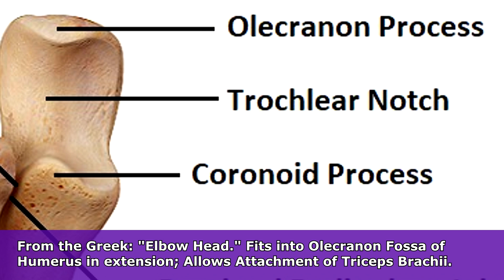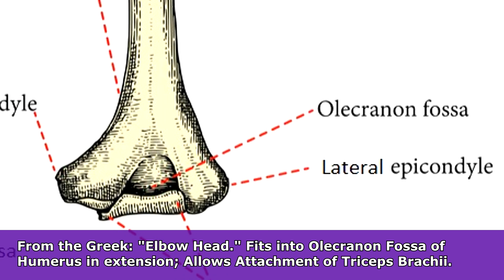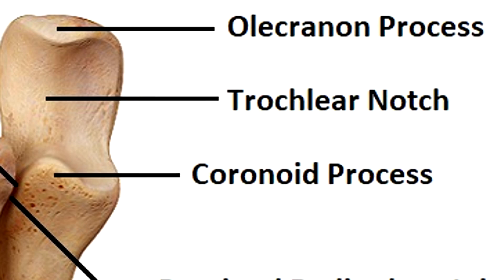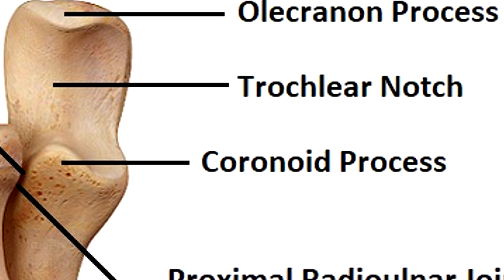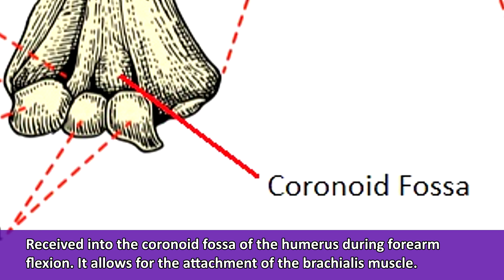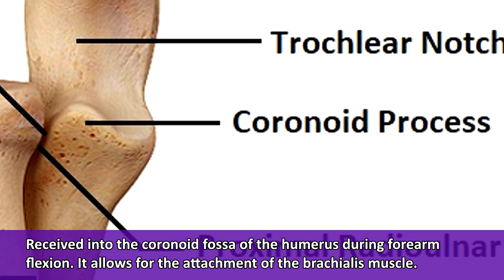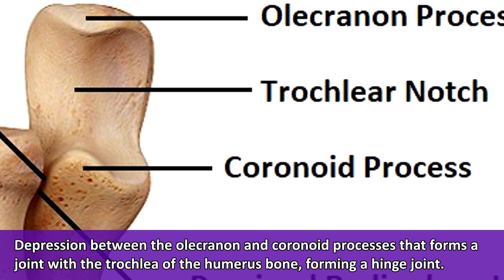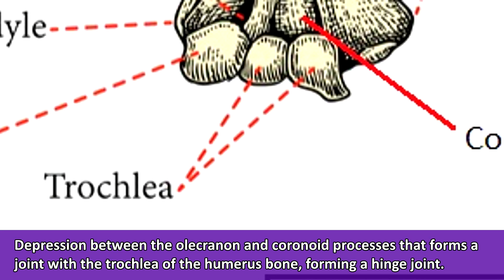The olecranon process of the ulna fits into the olecranon fossa of the humerus when the forearm is extended. The word process, when talking about a bone, means a pointy growth or projection. The coronoid process is another bony prominence received into the coronoid fossa of the humerus during forearm flexion, allowing attachment of the brachialis muscle. Between these two processes is a large depression called the trochlear notch, which articulates with the trochlea of the humerus, forming a hinge joint that allows up-and-down movement.